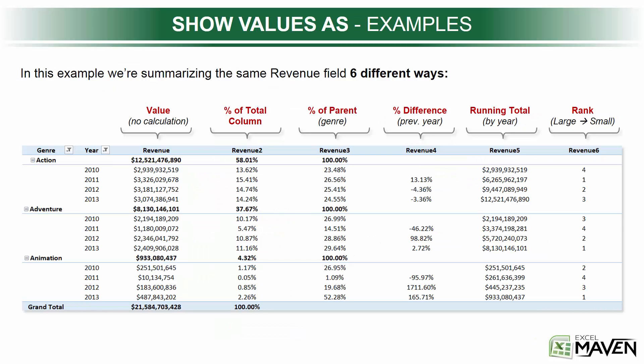In this slide I lay out a few examples, and this is a really nice way to demonstrate how the same metric — in this case revenue — can be displayed six different ways to reveal all sorts of different insights you can't get with the raw numbers alone. To set the stage, we're looking at ticket sales or ticket revenues by genre, by year, over a four-year period. The first revenue column is the default, no-calculation column — just the total sum of revenue for each year and genre. Moving to the right, we'll see five additional iterations of that revenue field, each with a different Show Values As calculation applied to it.